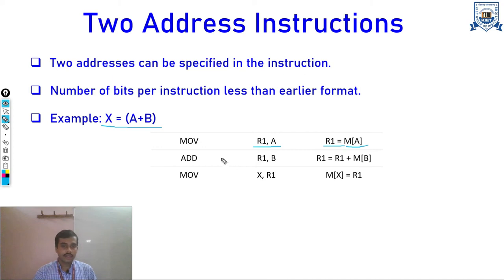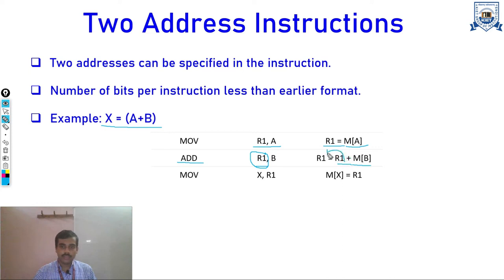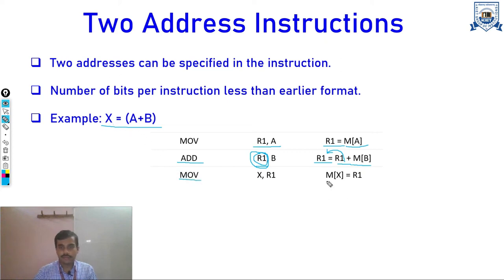First we use a MOVE instruction to move the data at memory location A into register R1. Then for any operation we specify the location where we want to operate; the first operand location serves as both source and destination. For example: ADD R1, M(B) adds M(B) to R1 and stores the result back in R1. At last we store the result to X: M(X) = R1, specifying two addresses.